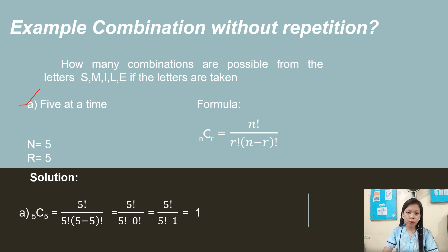Five at a time: n is 5 and r is 5. C(5, 5) = 5 factorial over 5 factorial times 0 factorial. Since 5 minus 5 equals 0, we apply the rule that 0 factorial equals 1. So 5 factorial over 5 factorial times 1 — we cancel out 5 factorial, and the answer is 1.